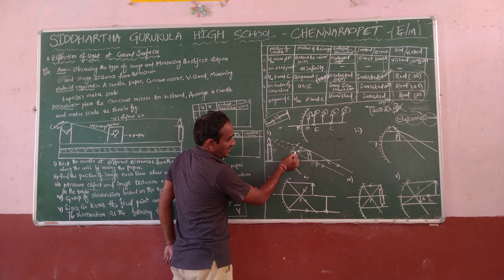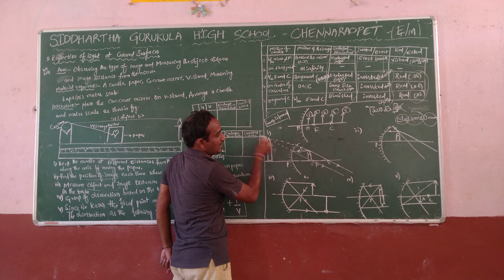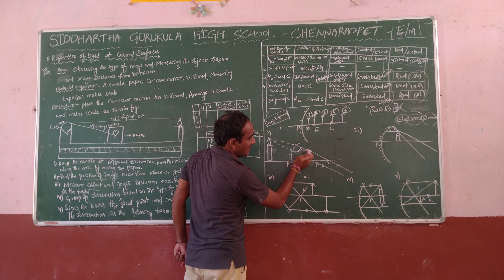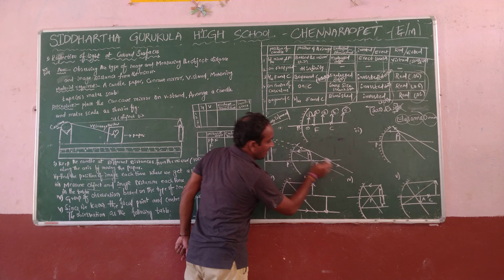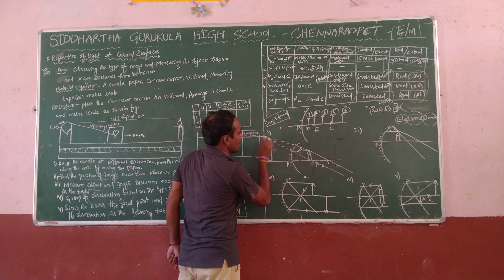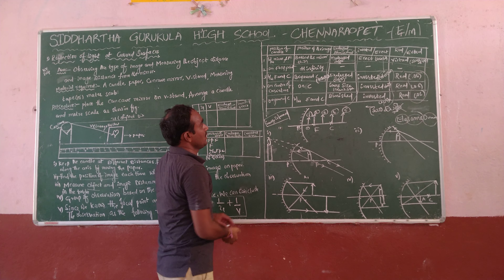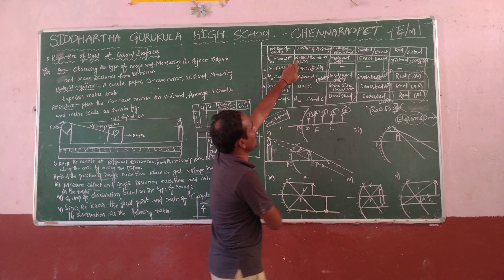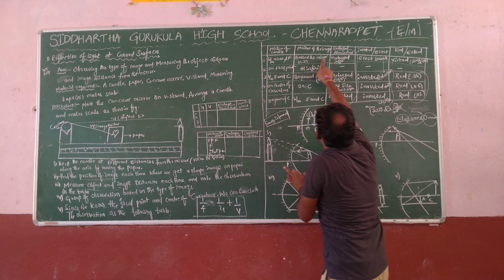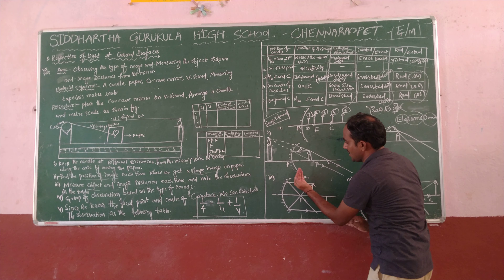Here, observe carefully. First one is from the source of light — it is the incident ray. The incident ray is represented there. Every incident ray should have a reflection.